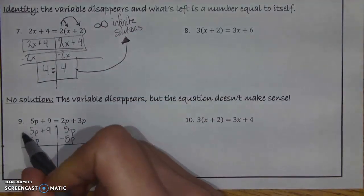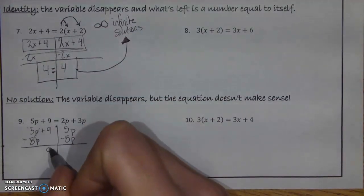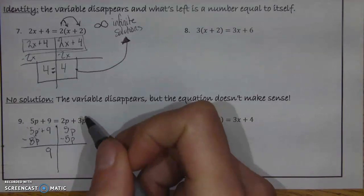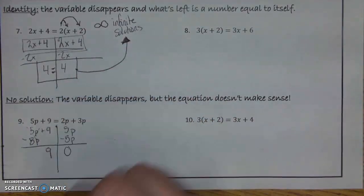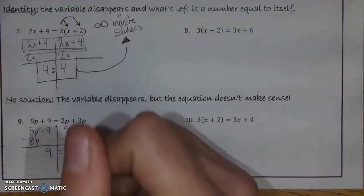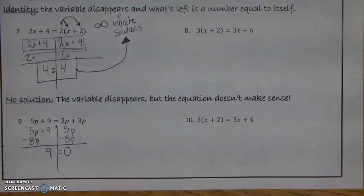Well, 5p minus 5p is 0, so we're left with 9 on this side. And on the other side, 5p plus that negative 5p is 0, so I'm left with 0 on this side as well. There's nothing left there. So I have 9 is equal to 0, which, let's face it, makes no sense at all because 9 is not equal to 0. It's not the same thing to say I have $9 and I have no money at all.